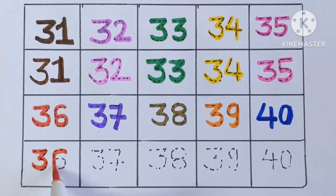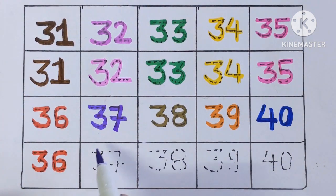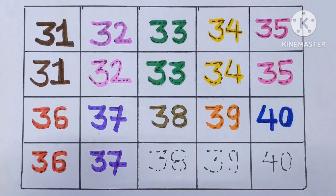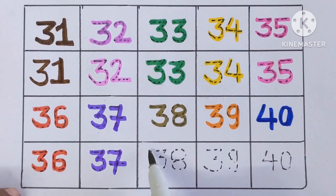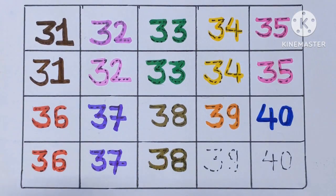36, 36, red color. 37, 37, violet color. Next number is 38, 38, olive green color.